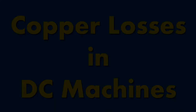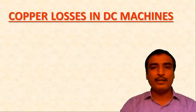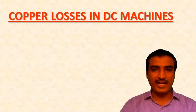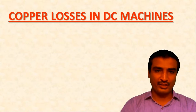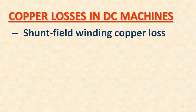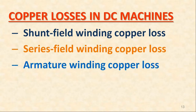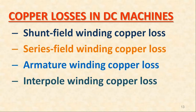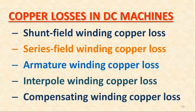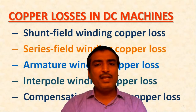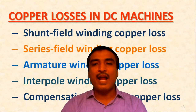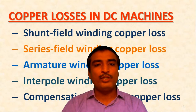Copper losses in the DC machine: The copper losses occur due to the currents flowing through different windings of the DC machine. Hence, the copper losses can be segregated as shunt field winding copper loss, series field winding copper loss, armature winding copper loss, interpole winding copper loss, and compensating winding copper loss. The copper loss in any winding depends on the resistance of the winding and the square of the current flowing through that winding.